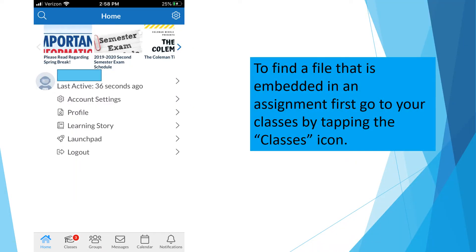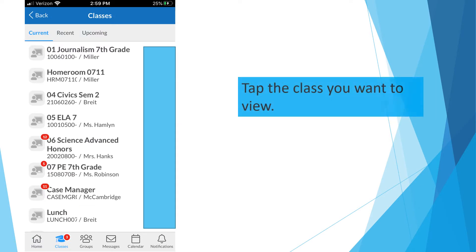To find a file that's embedded in an assignment, first go to your classes by tapping the classes icon. Tap the class you want to view. We're going to go to Civics.